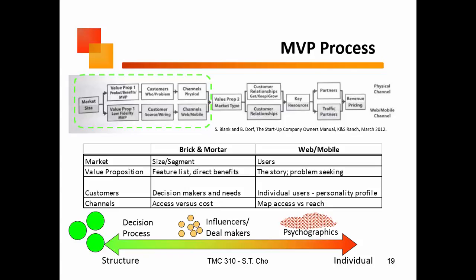This is actually out of your textbook and explains what the MVP process is: you figure out what the value proposition is, what your market size is, what your market is and how it pertains to the customer, and your value proposition in terms of customer relationships, resources, partners, and everything else. The biggest thing is figuring out who you're going to talk to. The more structured it is, the more you're interested in decision processes — these are corporations. On the other end of the spectrum are individuals, where you're interested more in psychographics. And if it's somewhere in the middle — not quite an organization, not quite individuals — then you're interested in how to contact influencers.